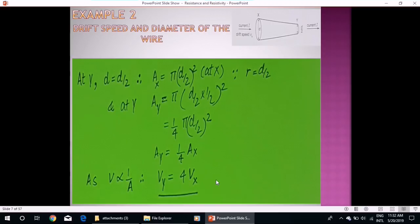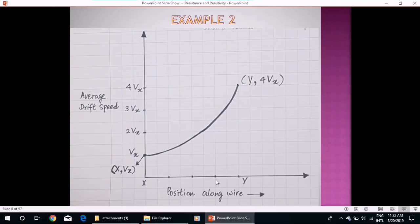Let's see how the curve represents this variation. Position along wire from X to Y is plotted against X axis, and drift speed is plotted along Y axis. So at X drift speed is Vx, and at Y drift speed will be four times and it will have an increasing gradient.